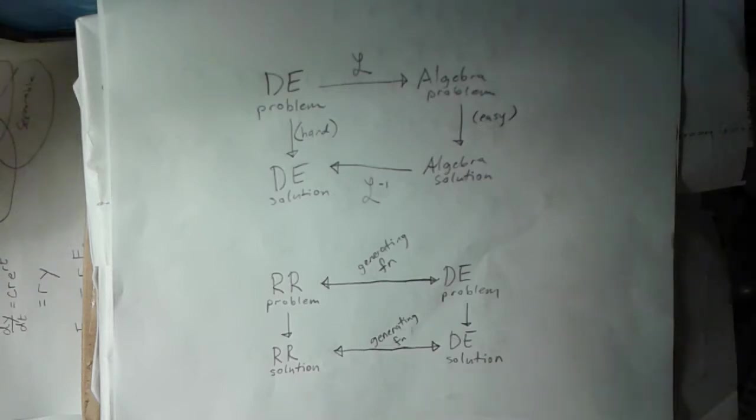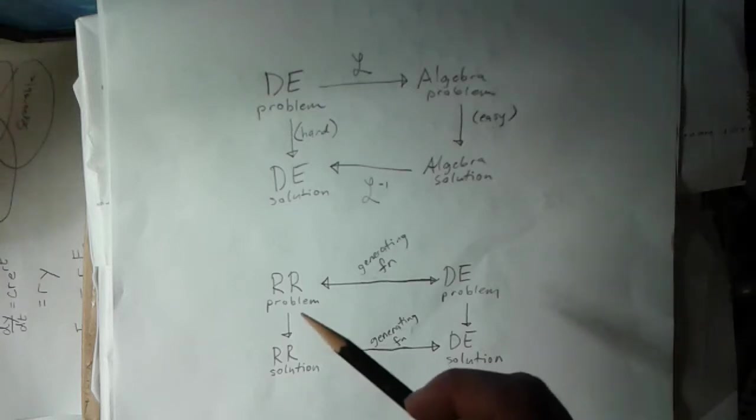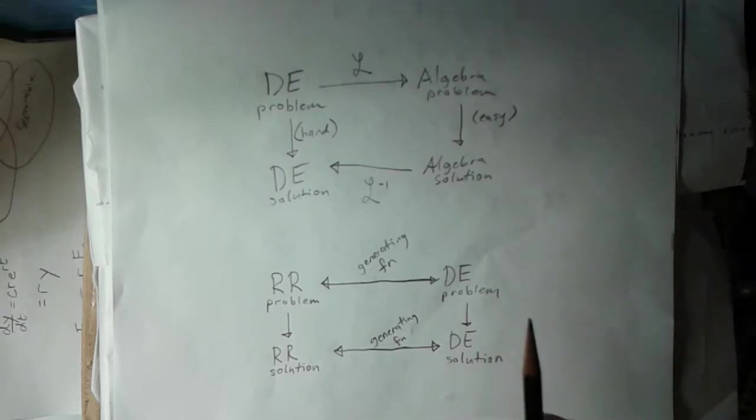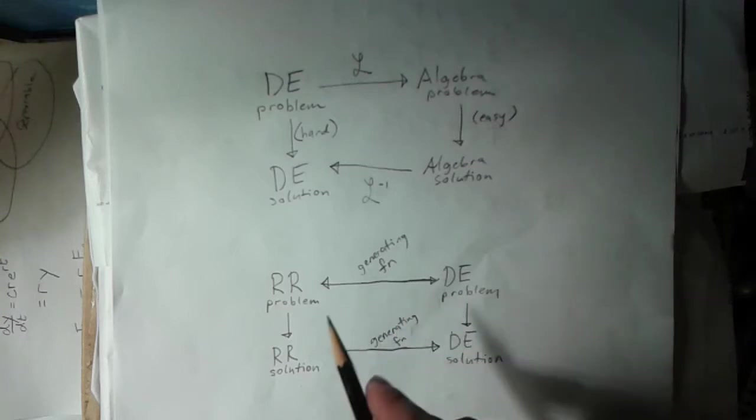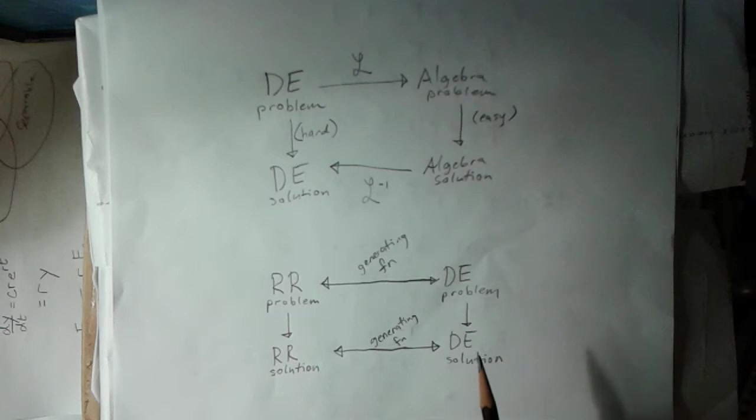But realistically, often times it's going to be easier to solve the recurrence relation using a method like guessing. And so really, it's also very useful to start with a differential equation. I'm going to be able to turn those into a recurrence relation, solve the recurrence relation, and then use the generating function to get back to the differential equation solution.